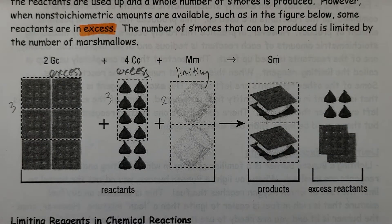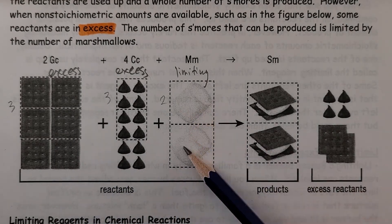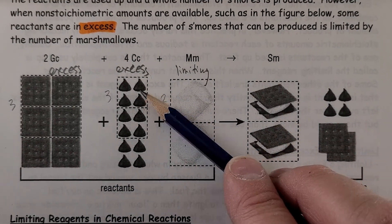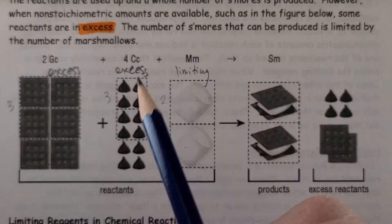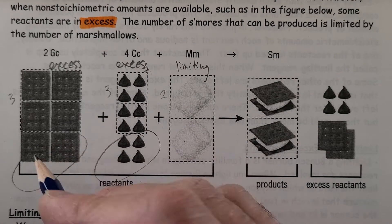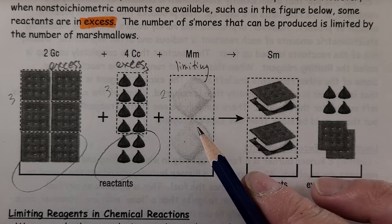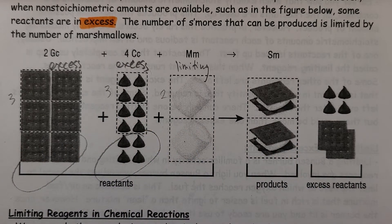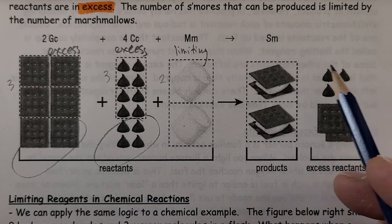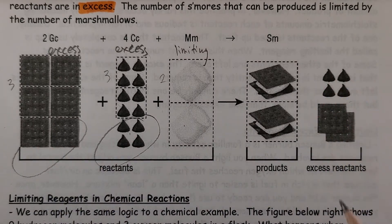So in this case, marshmallows are the limiting reagent, and the chocolate chips and graham crackers are the excess. We'll have two marshmallows used, two sets of four chocolate chips, and two sets of two crackers — and here are the leftovers. That's quite an easy example where we can see exactly what we get.